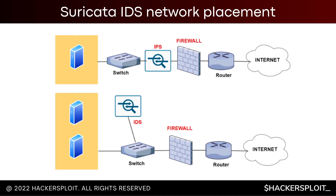Similarly to the Snort video, Suricata can be implemented in two ways. In IPS mode, the internet goes through the router, then to the server running Suricata, then to the switch. In IDS mode — which is what we're doing — the internet connection comes into the router, optionally through a firewall, into the switch, and then the server running Suricata is connected there, running in intrusion detection mode.